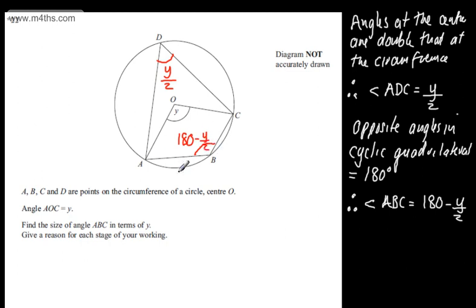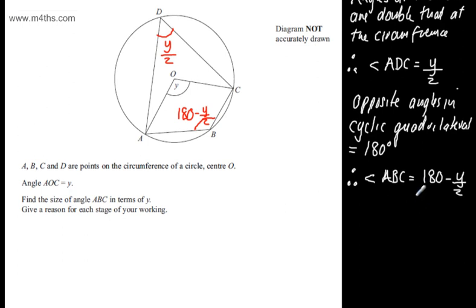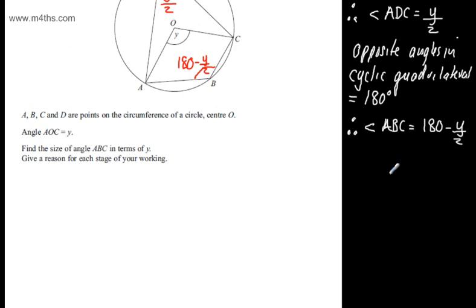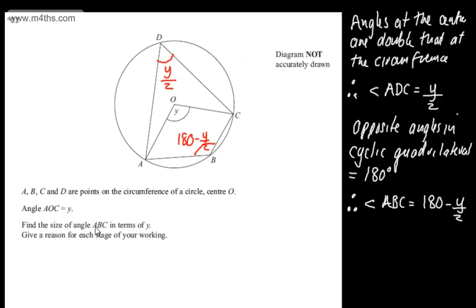So that gives us the angle ABC, and I've written down clearly why I've used each value in the steps that I've done. So final answer, the angle ABC in terms of Y is 180 minus Y over 2 degrees, and that question carries four marks. A few different ways that you could do that, essentially some justification, and this is your final answer, will give you the four marks.